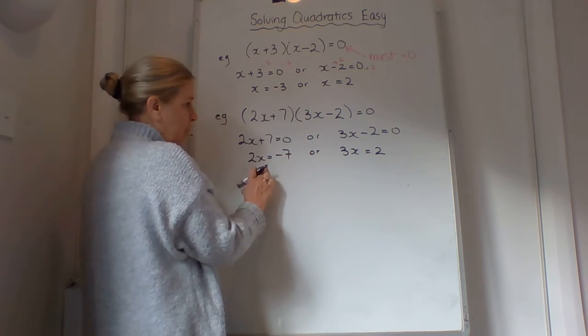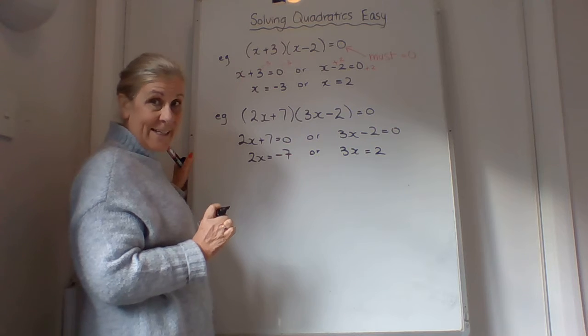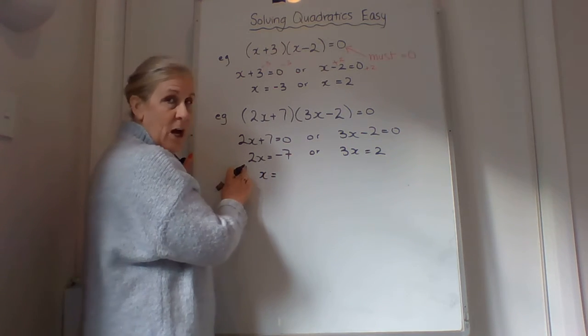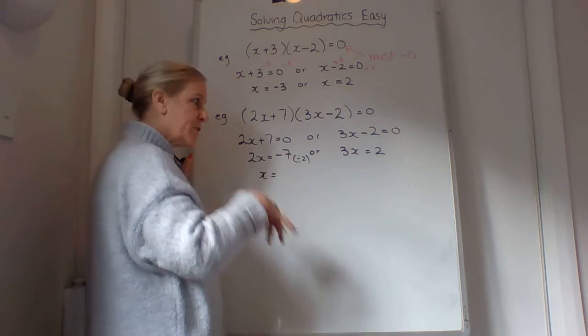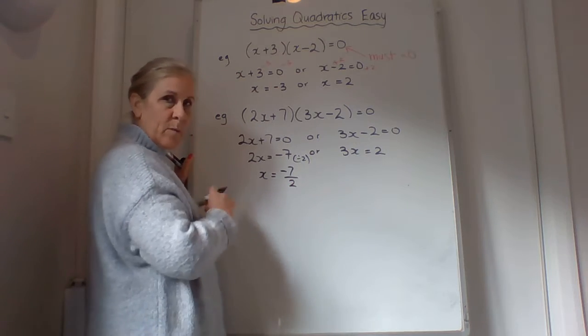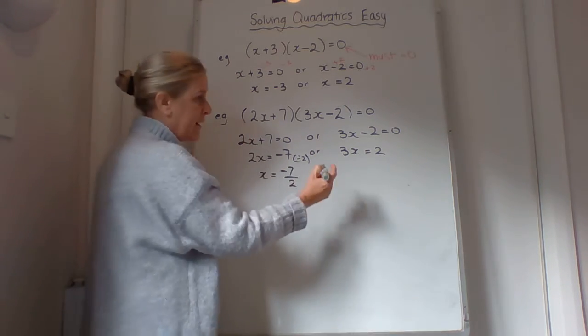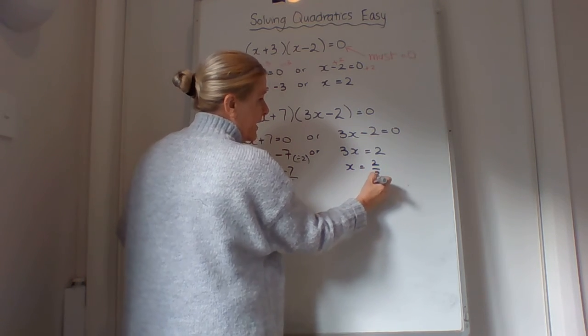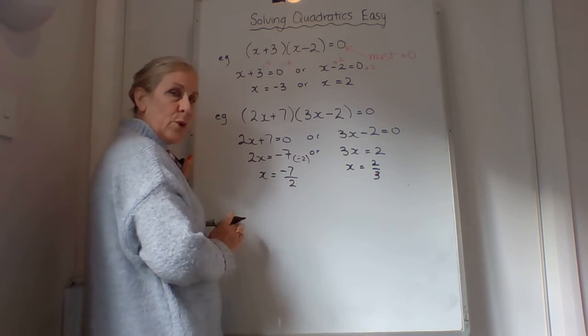Now we've got 2x equal to that, but we're only after the answer for x. So we need to get rid of this 2. x equals, we're going to divide by 2. That means it goes to the bottom, -7/2. When we move it to the other side, it either goes to the bottom of the heap or the back of the line. So this one will be 2/3. So our answers here are -7/2, or 2/3.